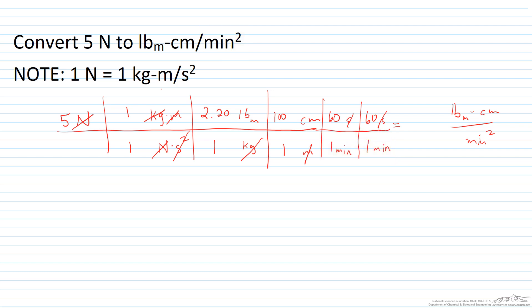So now it's just a matter of multiplying all the values. 5 times 2.2 times 100 times 60 times 60. And that will be the value that we're going to place here. And we've got the units in what we want. And when we do that, we get about 4.0 times 10 to the 6. That's in scientific notation. So we get 4.0 times 10 to the 6, pound mass centimeters per minute squared.